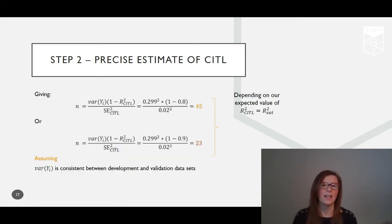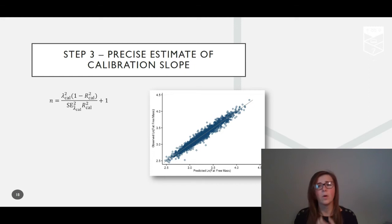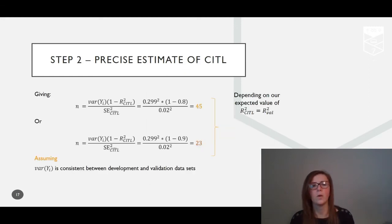Applying the calculation gives a minimum sample size requirement of 45 children with a more conservative estimate of R-squared val equals 0.8. This is, of course, assuming that the variance of the outcome is consistent between the datasets. If you expected the variance to be quite different, then you could choose any value that you thought was appropriate.